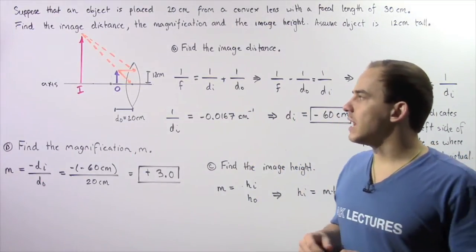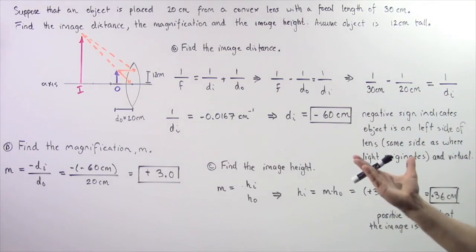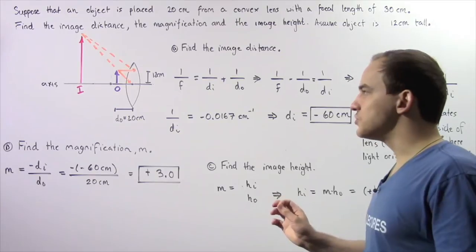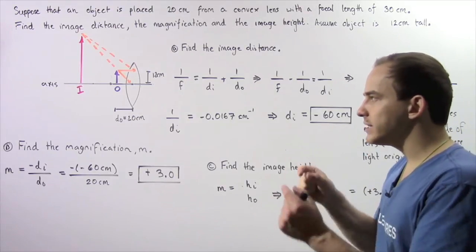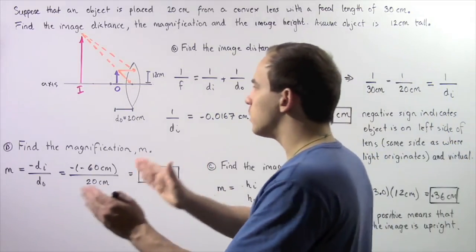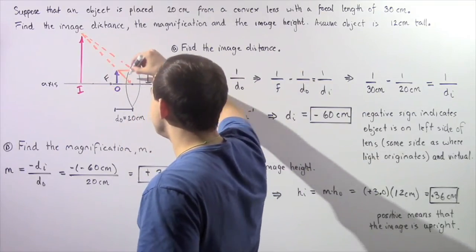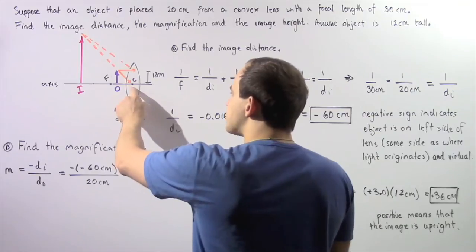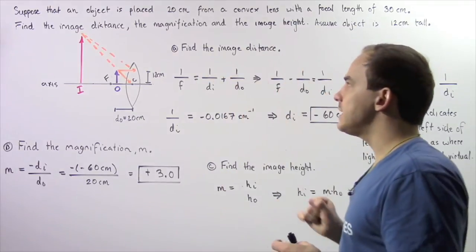Let's continue solving examples on convex or converging lenses. Suppose that an object is placed 20 cm from a convex lens with a focal length of 30 cm. Find the image distance, the magnification, and the image height — assume that the object is 12 cm tall. So we're essentially placing our object in between our lens and the focal point, which we'll label as point F. The object is placed 20 cm from the center of our lens and the height of the object is 12 cm.